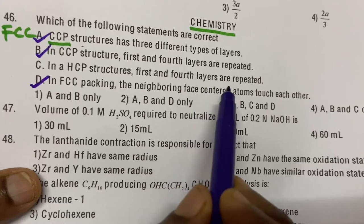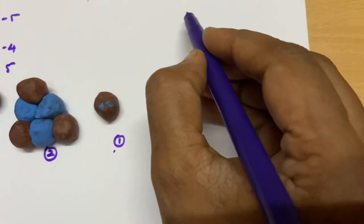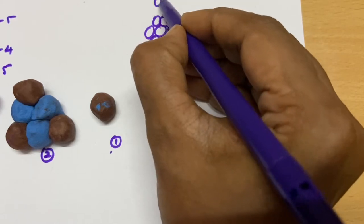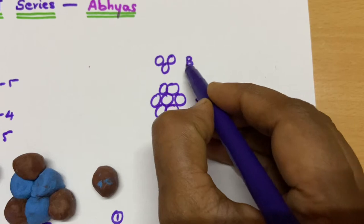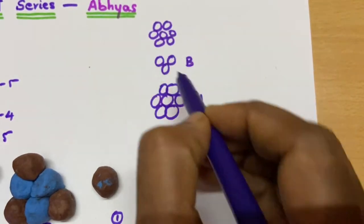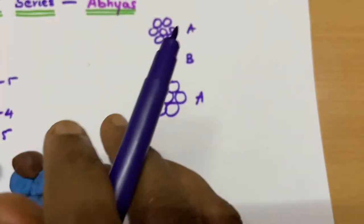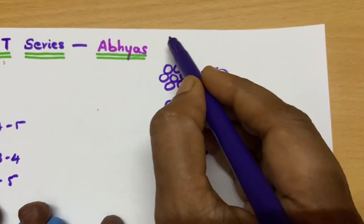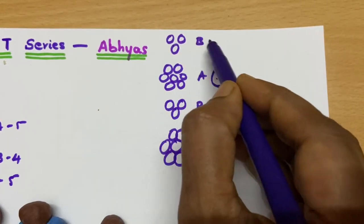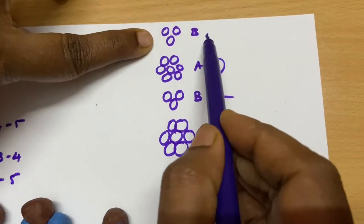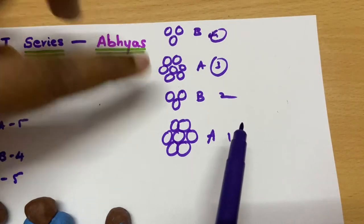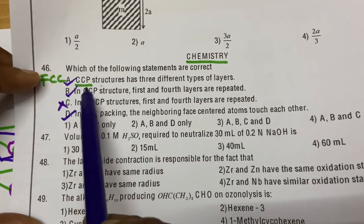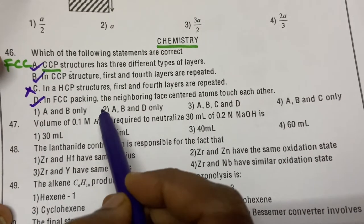Now we check statement C: In HCP structure, first and fourth layers are repeated. In HCP, layer A is the first layer, then layer B with three atoms above it, and then A repeats. So the layers are: layer 1 (A), layer 2 (B), layer 3 (A). The fourth layer would again be pattern B — NOT the first layer pattern A. So the first and fourth layers are NOT repeated in HCP. Statement C is not true. The correct answer is A, B, and D.